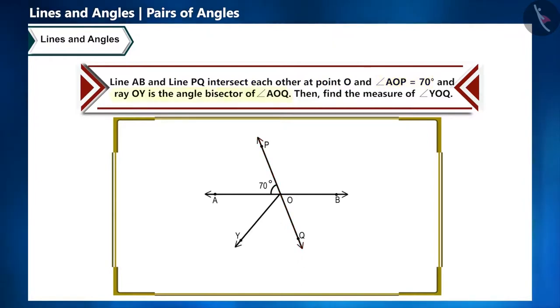Now we have to draw ray OY which is the bisector of angle AOQ. This means ray OY divides this angle into two equal parts. And we need to find angle AOQ. Try to solve this question yourself.